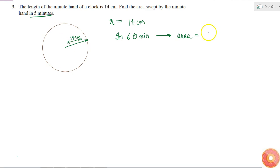So in 5 minutes, how much will it cover? In 5 minutes it will cover the area of πr² divided by 60, this is the area covered in one minute. If I multiply with 5, then I will get the area covered in 5 minutes because the motion of the minute hand is uniform.